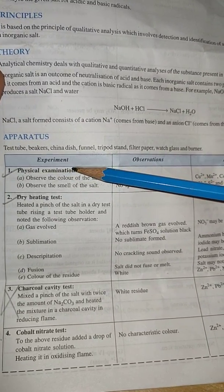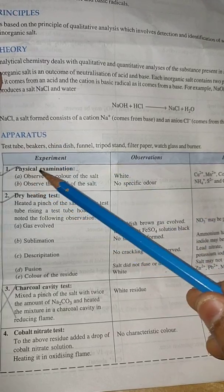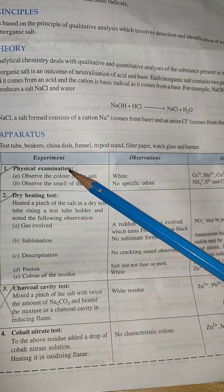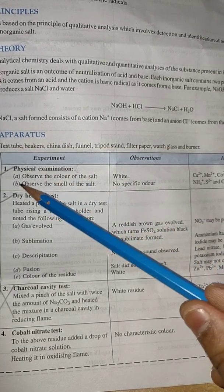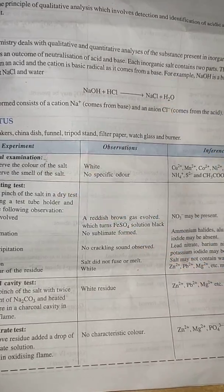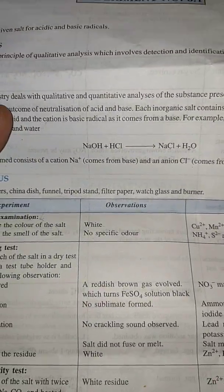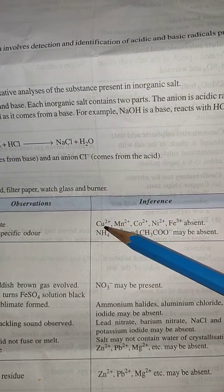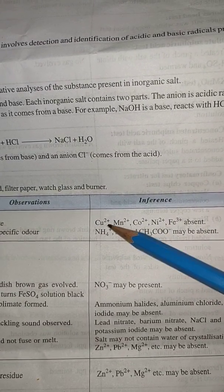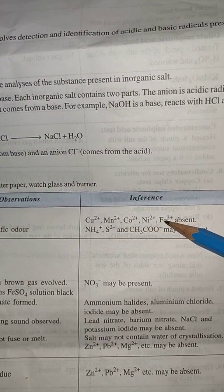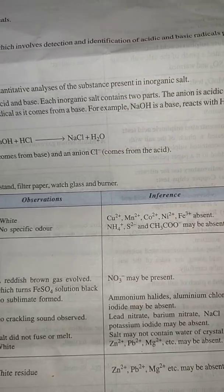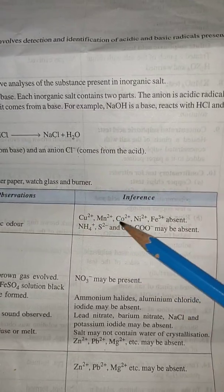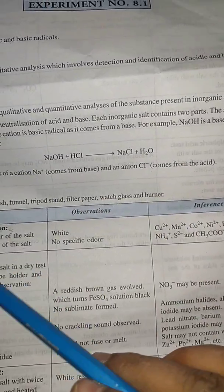The physical examination is the heading of the first part of experiment. Just observe the color of the salt. If the color of the salt is white, then these cations like copper, manganese, cobalt, nickel, iron may all be absent because these cations have some kind of colors.